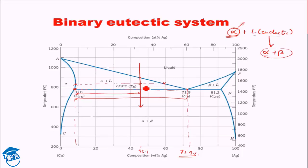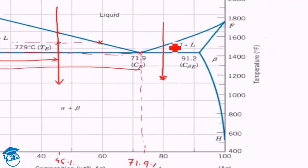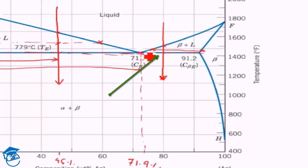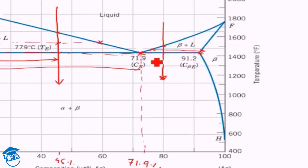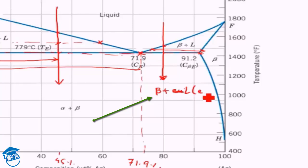Similarly, if we take a composition on the opposite end — say 80% silver — and cool it down, the liquid's composition again tracks the liquidus line and at the eutectic temperature the remaining liquid hits the eutectic composition. So regardless of whether you are at a lower or higher concentration than the eutectic composition, upon slow equilibrium cooling you will get a liquid of eutectic composition at the eutectic temperature. In this case, you will get beta plus liquid in eutectic form, which then converts to alpha plus beta on further cooling.